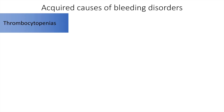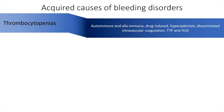Acquired causes may be due to thrombocytopenias as seen in auto and alloimmune thrombocytopenias, drug-induced hypersplenism, disseminated intravascular coagulation, and thrombotic thrombocytopenic purpura and hemolytic uremic syndrome.